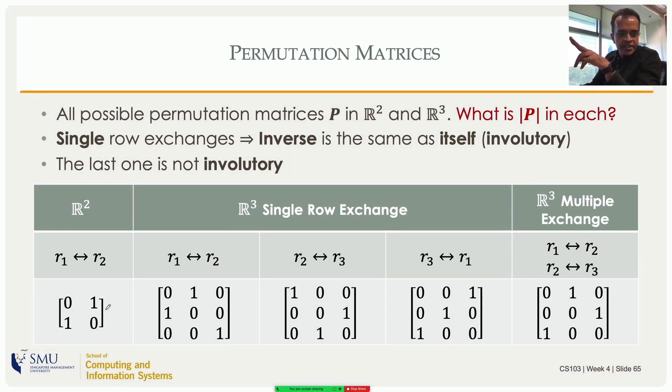If I apply this twice, I'll get the original one back because I'm swapping and then swapping them back again. So I'll get the original one back, and for that reason its inverse is the same as itself. Such matrices are called involutory.